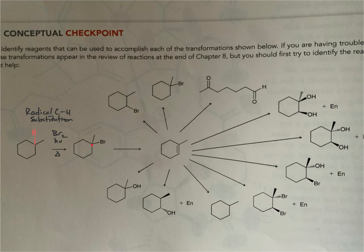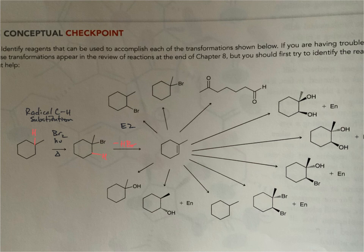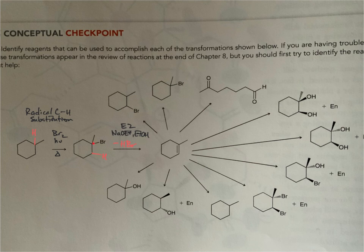Once we have this tertiary bromide, in the next reaction we're doing an elimination of HBr across these two carbons — that's the E2 mechanism. We want to use a base, but not a bulky base because we won't get the correct regioselectivity. So we'll use sodium ethoxide in ethanol as the solvent. We deprotonate, form the pi bond, bromide leaves, and we arrive at our alkene.